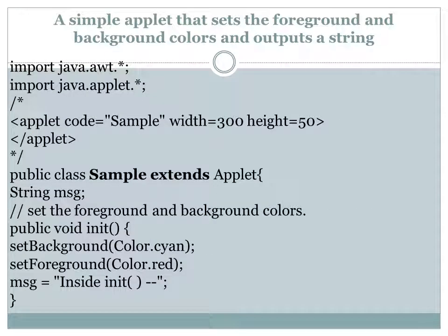We will now see a sample applet program that sets foreground and background color and also outputs a string. For every applet program, the first two import statements bring in two important packages: the AWT package (Abstract Window Toolkit), which is necessary for GUI-based or window-based programs, and the Applet package, which must be imported for applet programs.